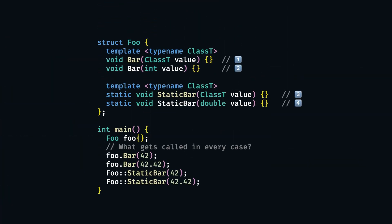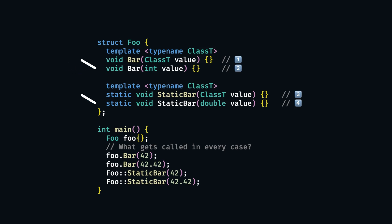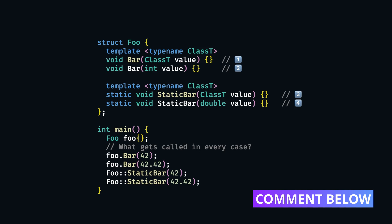And just like with function templates, we still should prefer overloading these methods. As a tiny exercise, tell me in the comments which methods get called in which order in this example.